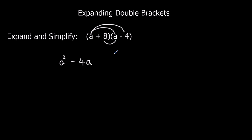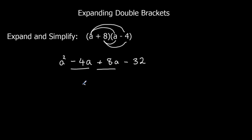Then 8 times a is 8a. And I've got a positive times a negative, so that's going to give me a negative answer: 8 times 4 is 32, so minus 32. Then I can simplify — I can add up the two a terms. Minus 4 plus 8 is plus 4. So the final answer is a squared plus 4a minus 32.